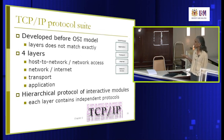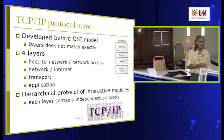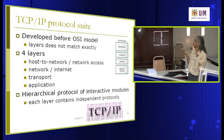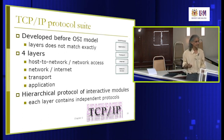TCP/IP is a hierarchical protocol where each layer contains independent protocols developed independently. This means a new protocol can be embedded at a layer without affecting anything else. For example, wireless only affects the network access layer — a TCP packet at layer 4 (transport) remains the same whether you use wireless or wired internet.